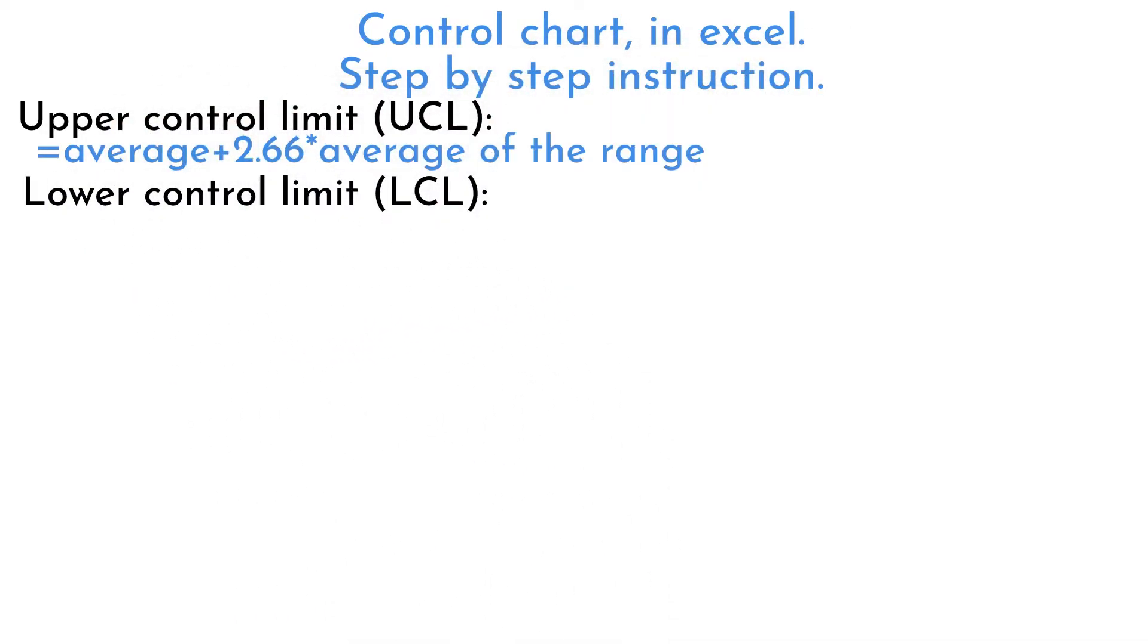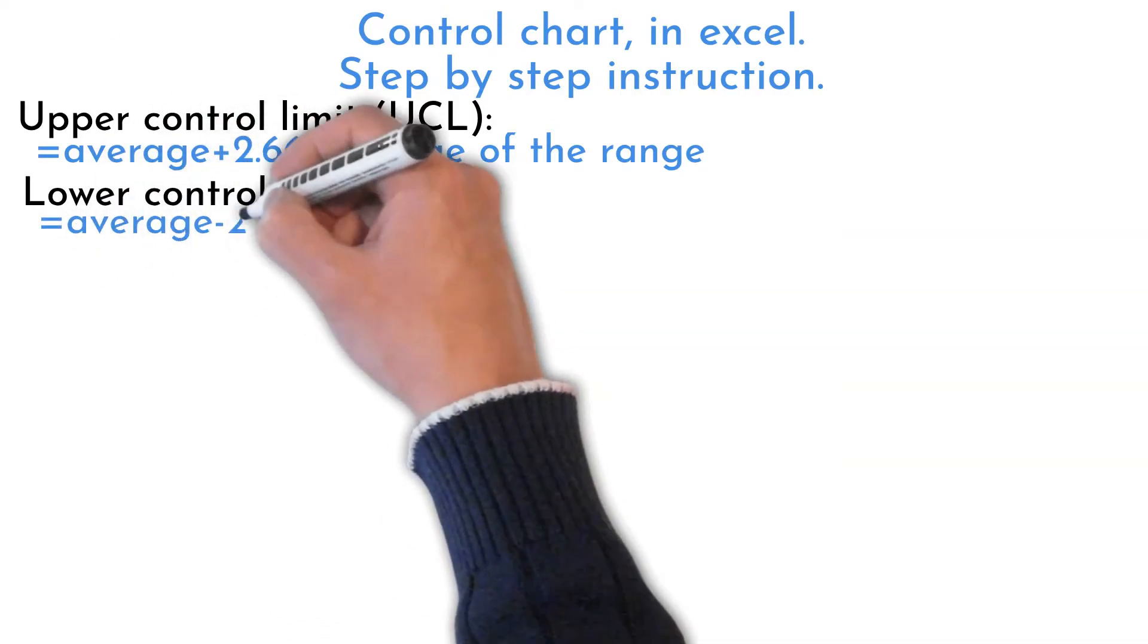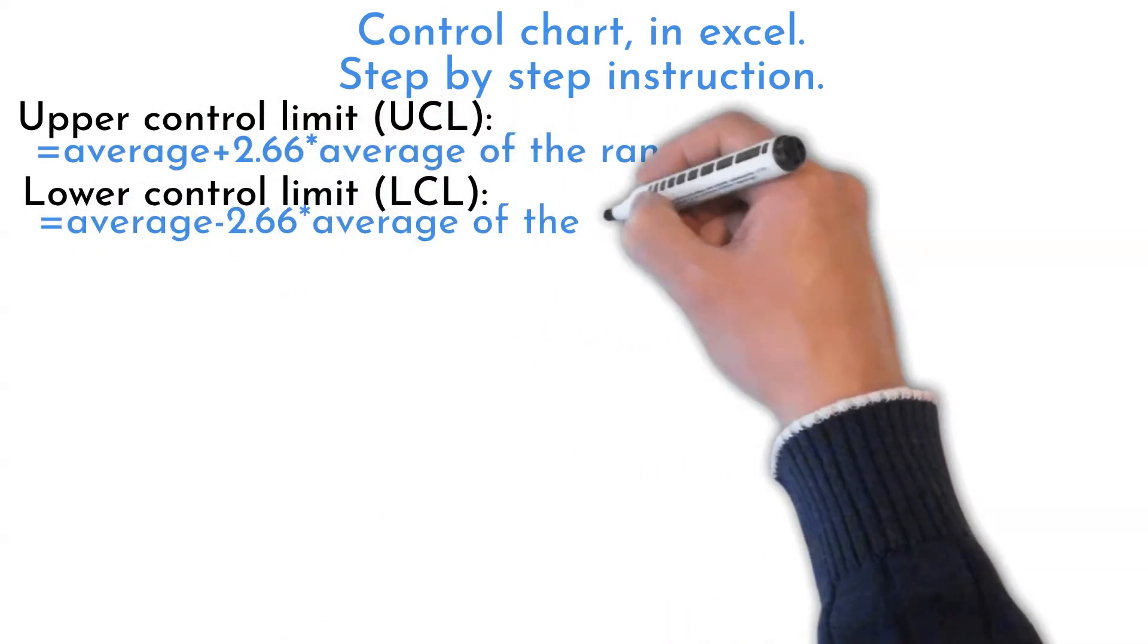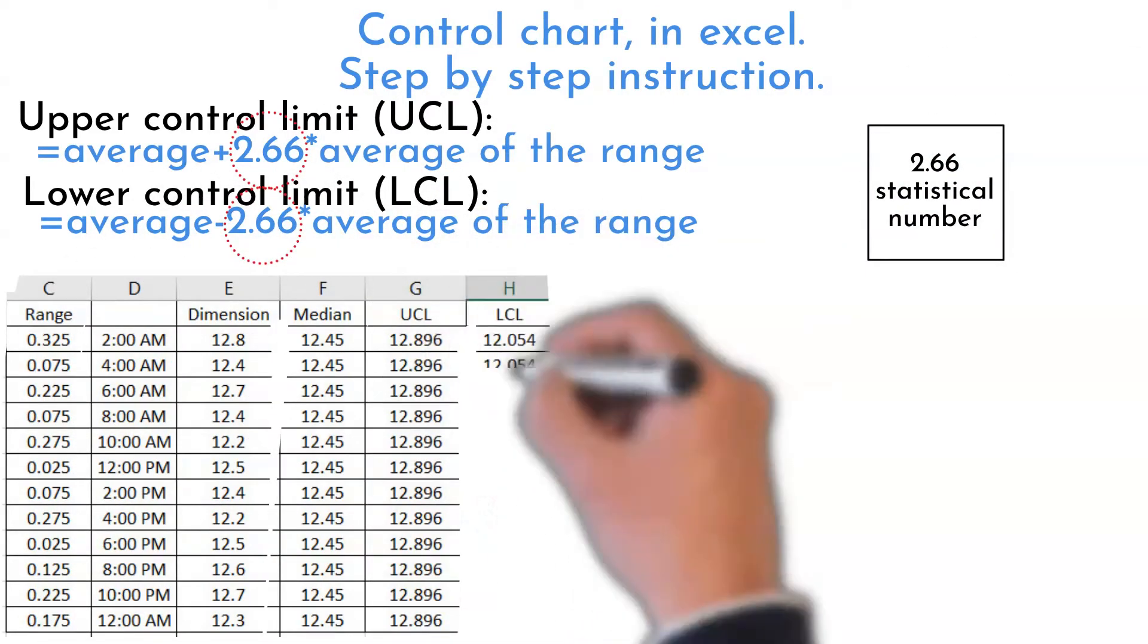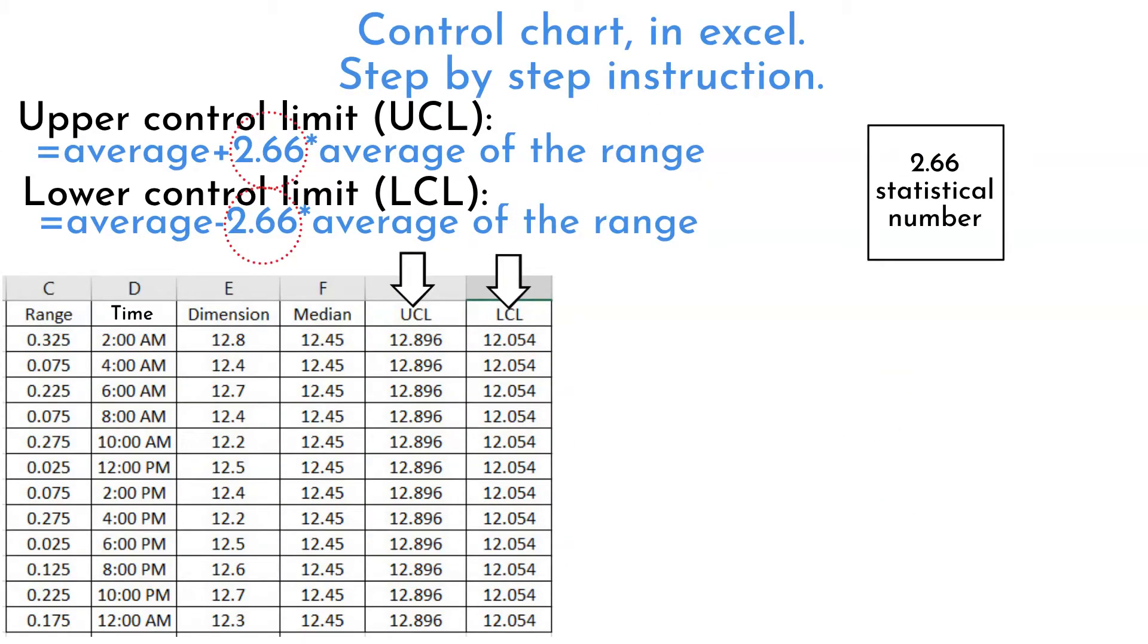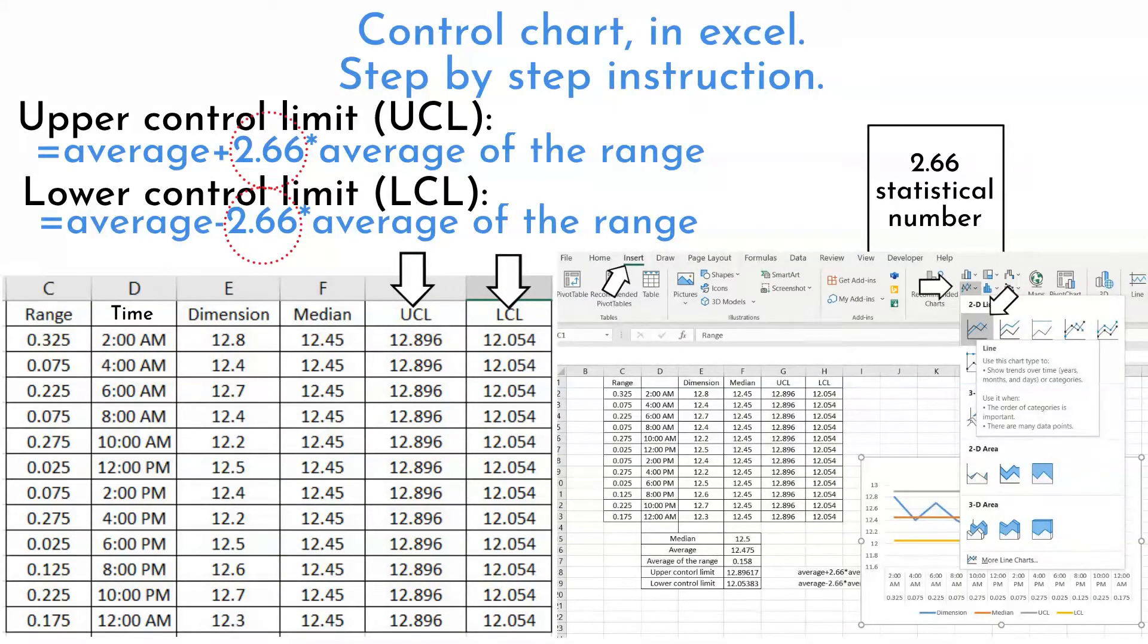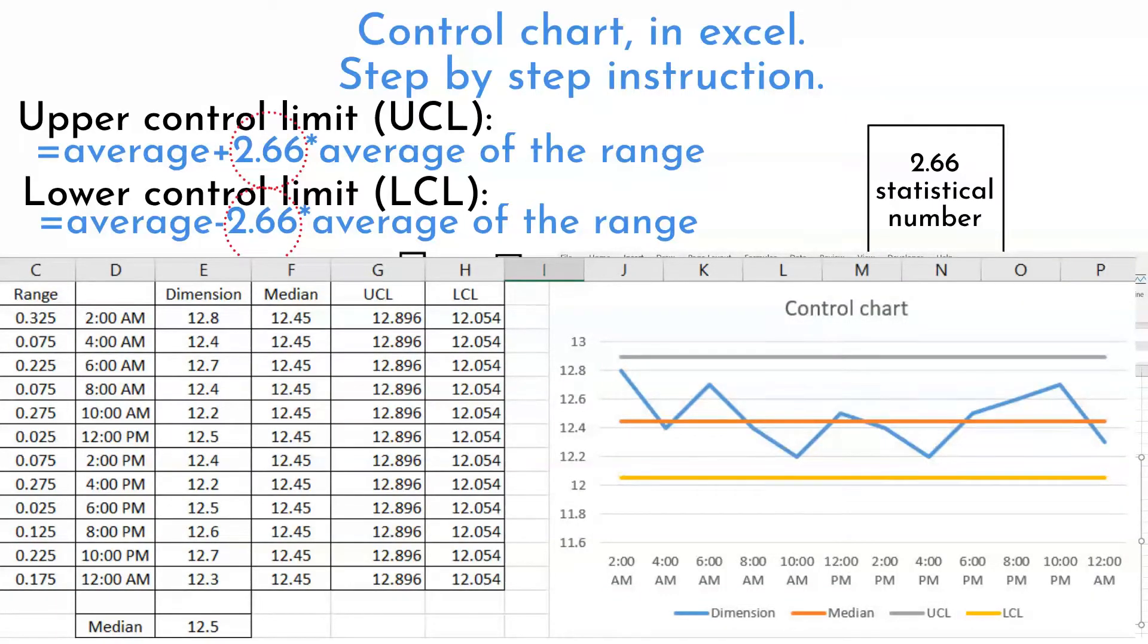And formula for lower control limit is average minus 2.66 times average of the range. 2.66 value is a statistical number. Both control limits are inserted to the table next to data point and median. Then we follow exact same steps as used on previous graph. And here is our control chart.